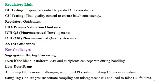Regarding the regulatory link: BU testing is an in-process control to predict CU compliance. CU testing is a final quality control to ensure batch consistency. CU is also done on core tablets and through stratified sampling to ensure in-process control. Regulatory guidelines are available from the FDA; ICH Q8 and ICH Q10 guidelines apply for BU and CU. ASTM guidelines are very important to understand regarding BU and CU, and stratified sampling guidelines are included in the ASTM guidelines.